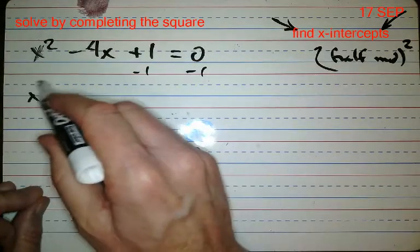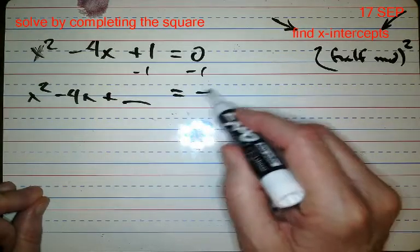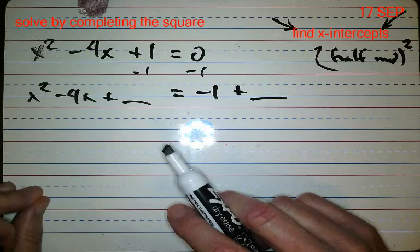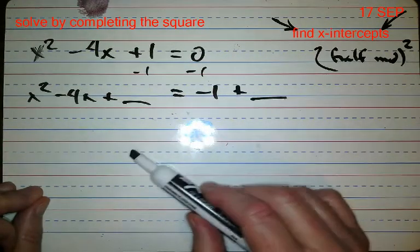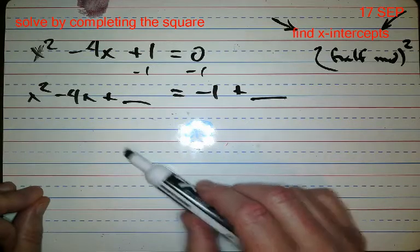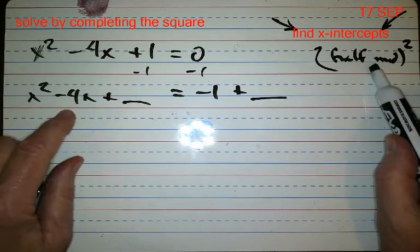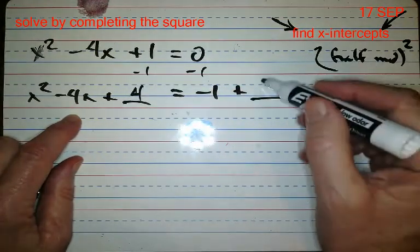Then I'll have x squared minus four x, I have no idea, negative one plus I have no idea, right? That's the whole idea—you have to move it over here so that you can get it ready to solve. Now then, half of the middle is two, half is negative two squared is four, right? So I'm adding four to both sides.